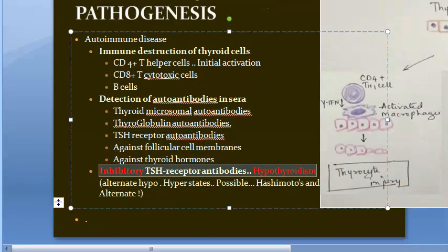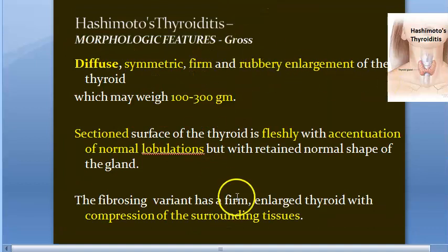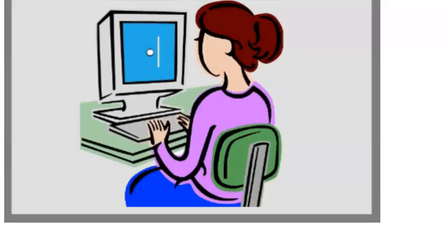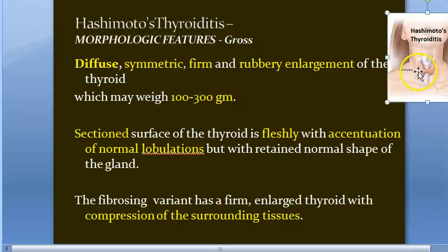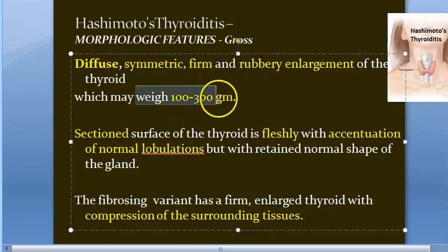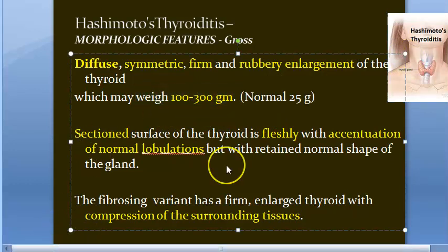Now coming to gross features. The thyroid gland shows diffuse, symmetric, firm, rubbery enlargement. It may weigh about 100 to 300 grams, whereas the normal weight of the thyroid is just 25 grams — so it has increased approximately 4 to 12 times.